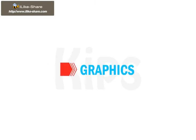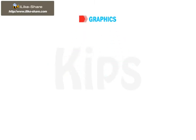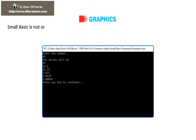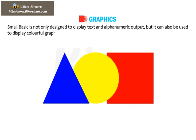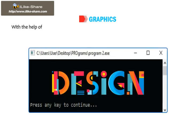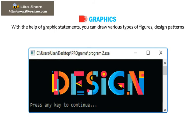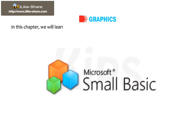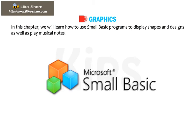Let me tell you about graphics. Small Basic is not only designed to display text and alphanumeric output, but it can also be used to display colorful graphics and generate different sounds. With the help of Graphic Statements, you can draw various types of figures and design patterns in different colors and styles. In this chapter, we will learn how to use Small Basic programs to display shapes and designs, as well as play musical notes.